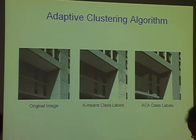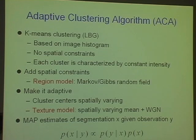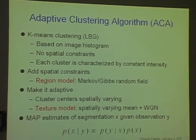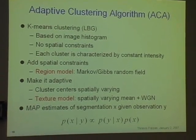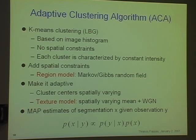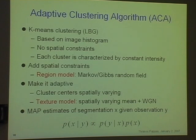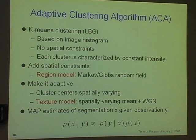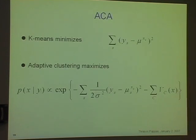This is the result of the adaptive algorithm. k-means clustering is based on the histogram with no spatial constraints — each cluster is characterized by constant intensity. We want to add spatial constraints using the formalism of Markov random fields, and we want to make it adaptive — allowing clusters to be spatially varying. Our texture model is a very simple one: spatially varying means — smooth but spatially varying — plus white Gaussian noise. We formulate it as a maximum a posteriori problem. X is the distribution of regions, just the labels; Y is the observed intensities. I'm going to be talking about grayscale, but it applies equally well to color. Using Bayes' rule, you have two terms: the a priori density and your conditional density, and you need to maximize that.